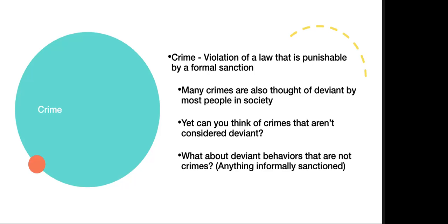Violation of law is considered a crime — a violation punished by formal sanction. Many crimes are also thought of as deviant by most people in society. Yet can you think of crimes that aren't considered deviant? If you were out protesting against Roe v. Wade, many people who are pro-choice would not see you as a deviant — they'd see you as fighting for your rights. This is the idea of Malcolm X, Martin Luther King, Rosa Parks — they were arrested. You can have deviants who aren't criminal, or crimes that aren't seen as deviant.